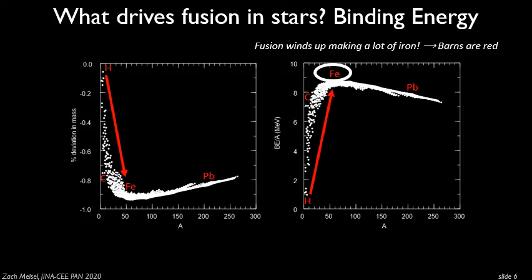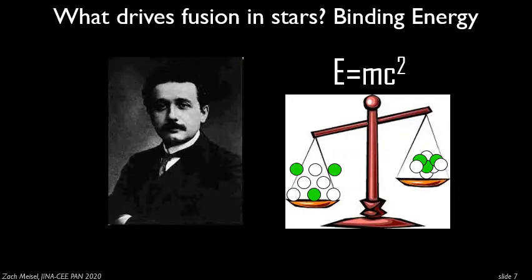You might say, what is this magic — how do you convert mass into energy? It comes from Einstein: E equals MC squared. There's an equivalence between mass and energy, so you can convert one into the other. If you take a whole bunch of individual protons and neutrons, those will be heavier than when you combine them together to make a nucleus. That extra mass is liberated as energy, and that is what powers a star.